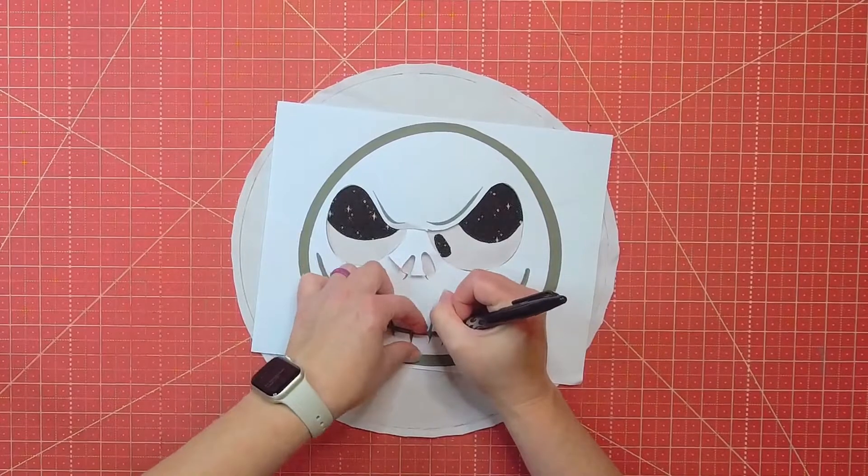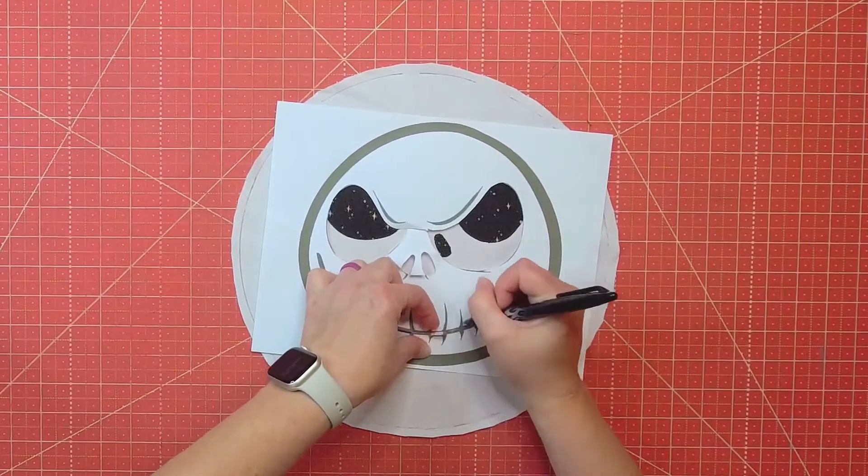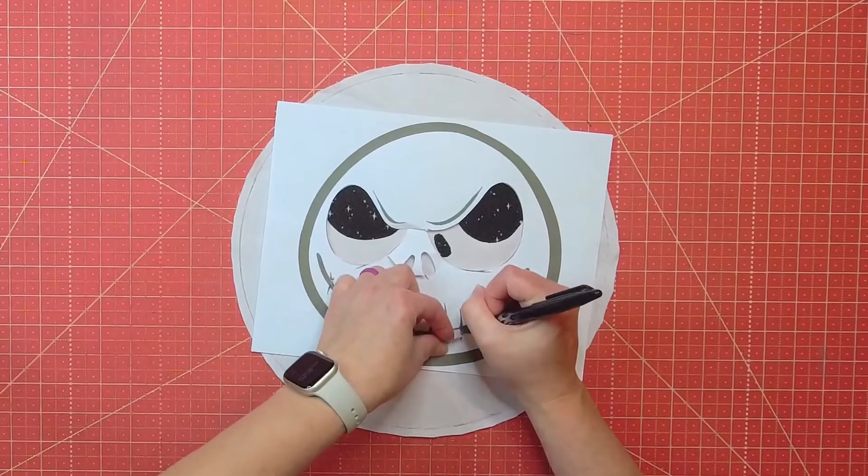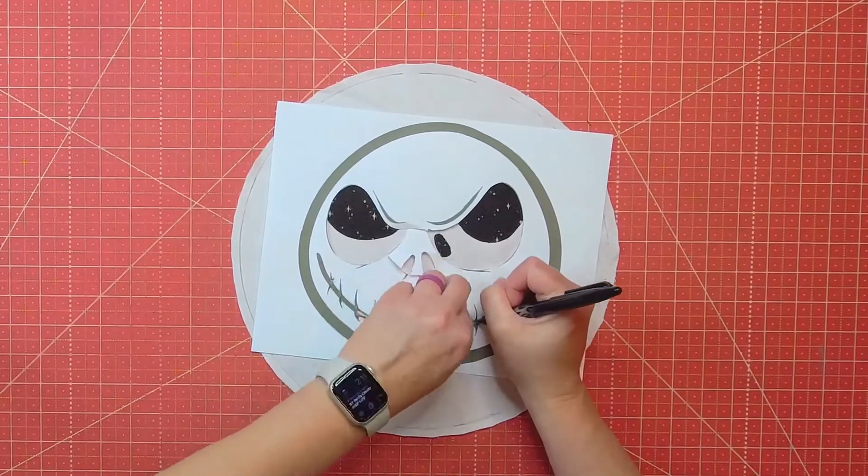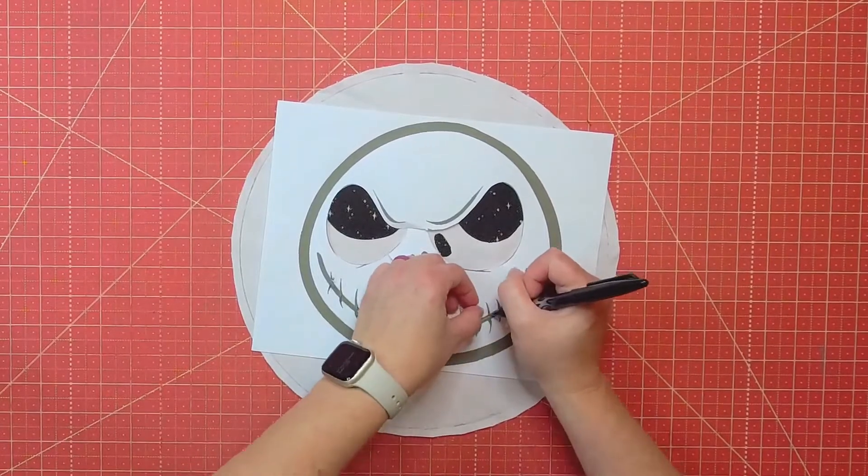So tracing them ensured that I got that look that I was wanting to kind of emulate on the pillow. So it took a little more time, I think doing this, but it really, I think is going to be worth it in the end to get the look that I liked when I saw this coloring page.